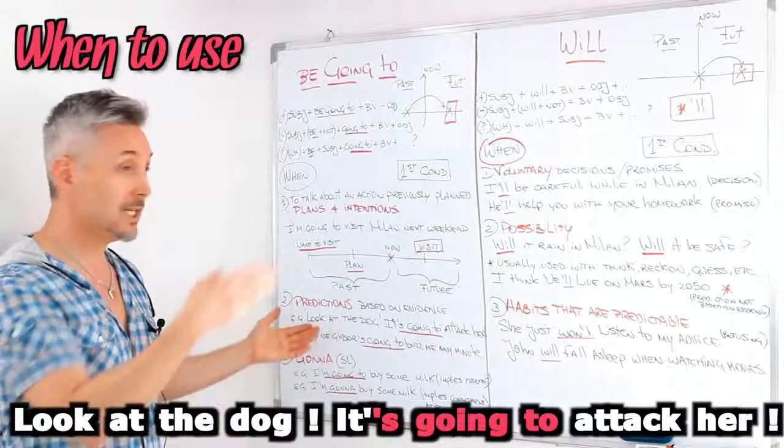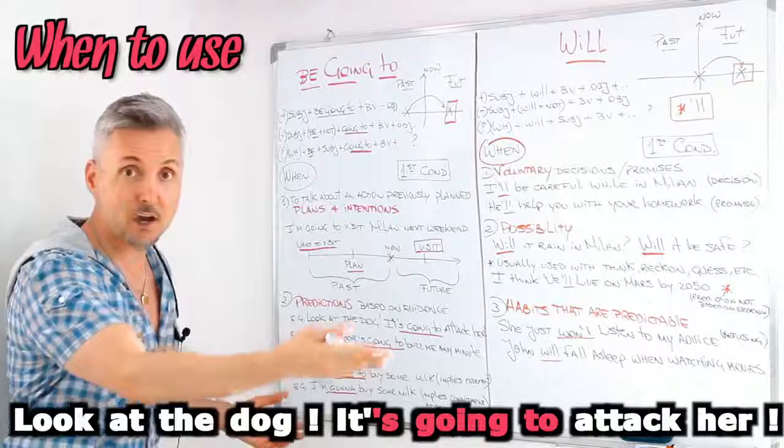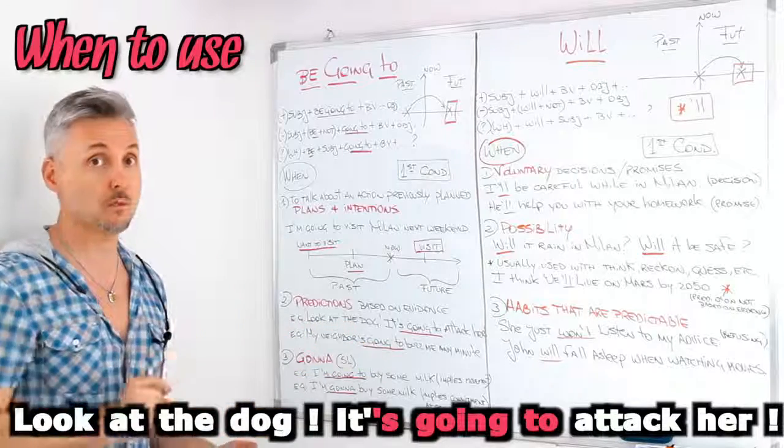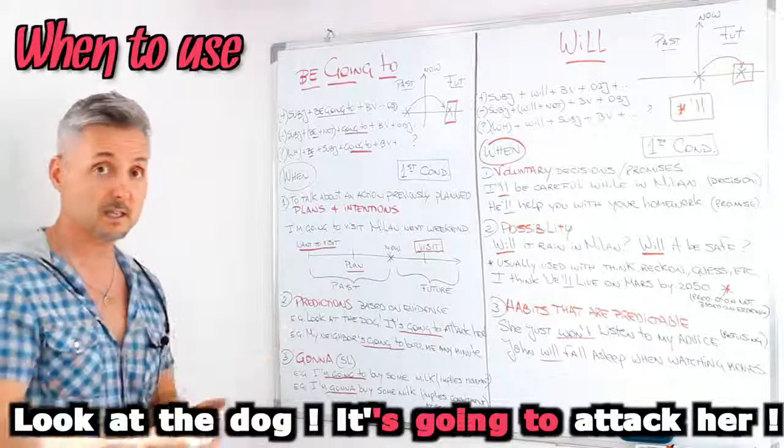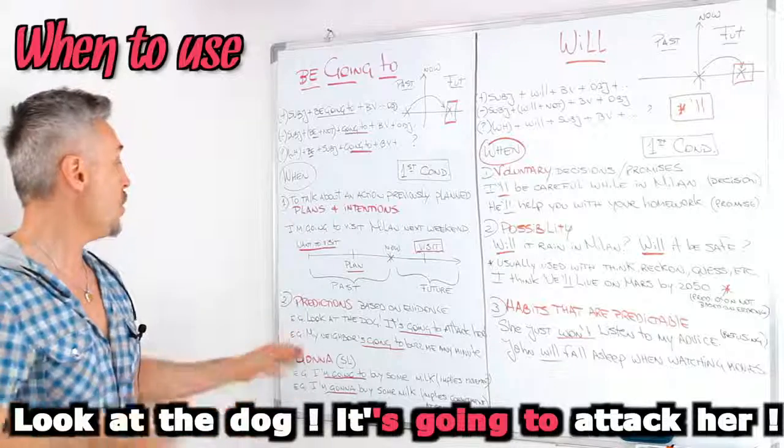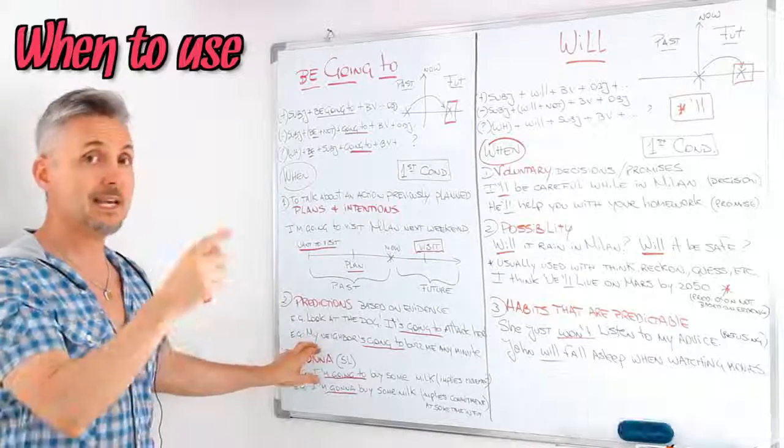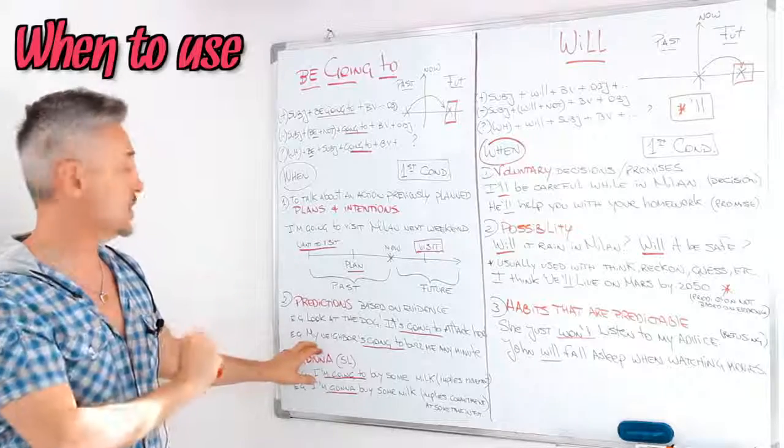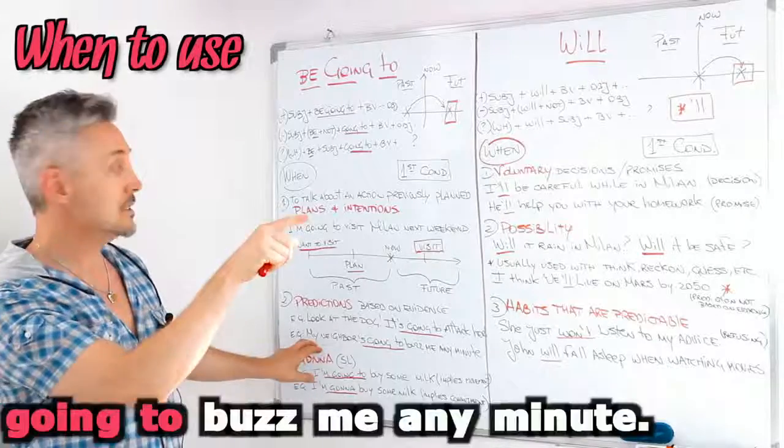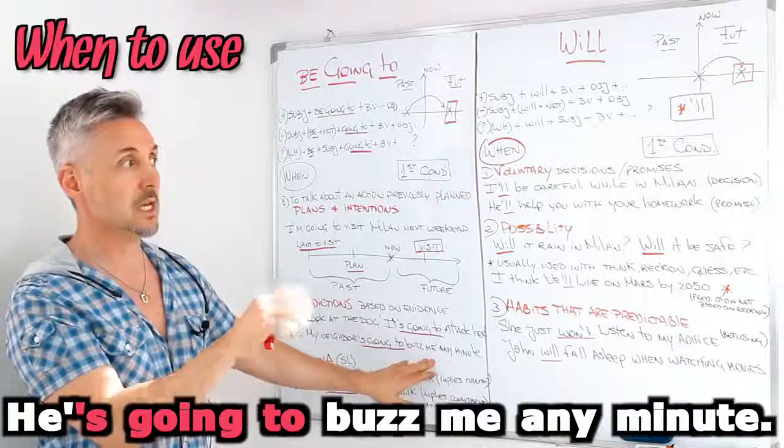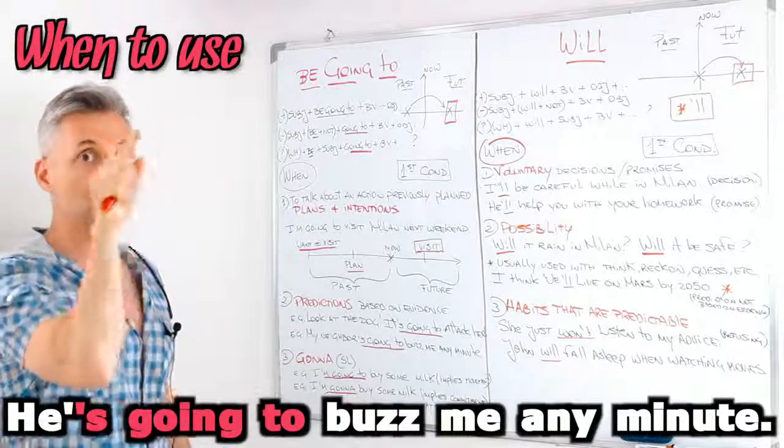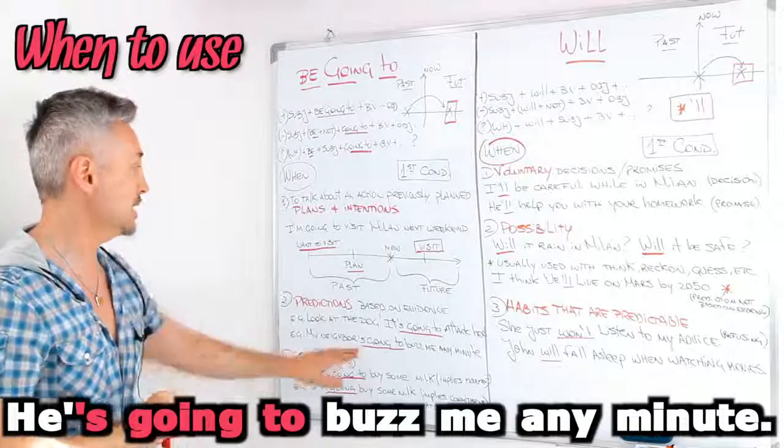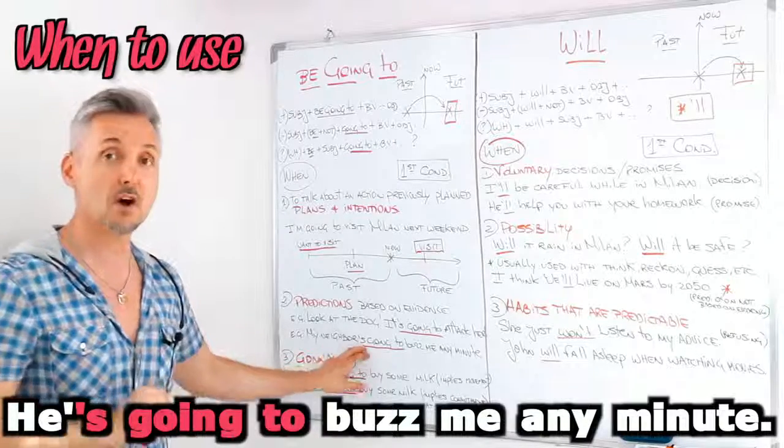So I say, look at the dog. It's going to attack her at that moment. It's a prediction based on evidence because I see it happening. Or for example, I see my neighbor by the window and he's going to buzz me any minute. So I see the neighbor walking and going to buzz me any minute. So it's a prediction based on evidence.